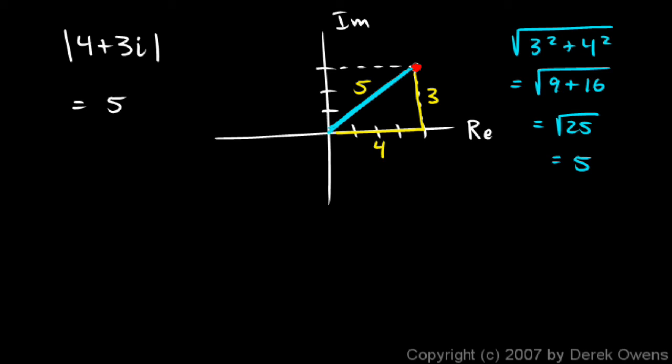So in general, if you have a complex number, a plus bi, and you take the absolute value of it, that's just going to be the square root of a squared plus b squared.